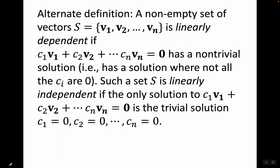Here's the alternate definition of linear dependence and linear independence, and this is actually the one we'll use. A non-empty set of vectors S = {v1, v2, ..., v_n} is linearly dependent if c1·v1 + c2·v2 + ... + c_n·v_n = 0 has a non-trivial solution.